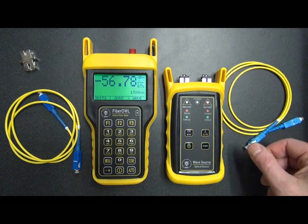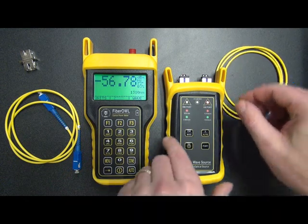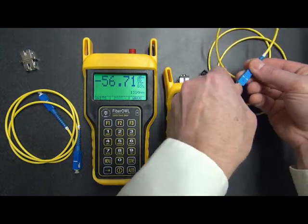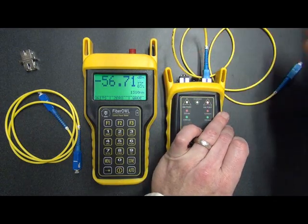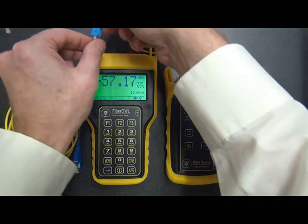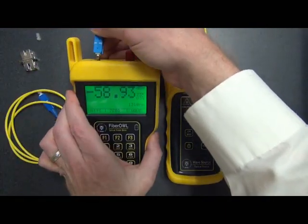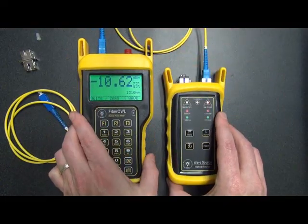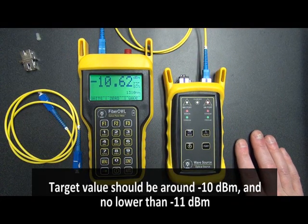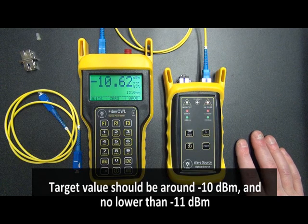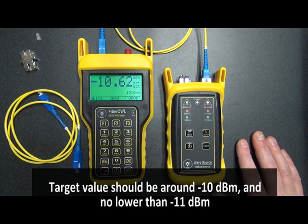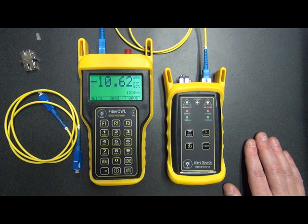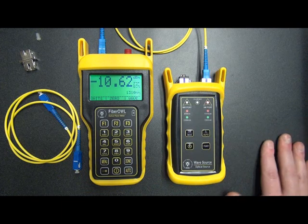Now we connect in the reference cable into the testers. On one end, we connect into the single mode port on the wave source and the detector port on the Fiber Owl. What we should see is a reading that's around minus 10 dBm. It could be a little higher or a little lower as it is in this case. But what we want to make sure is that we're not exceeding minus 11 dBm. Otherwise, this might indicate something else wrong with the cable. But in this case, our reading of minus 10.62 is okay.